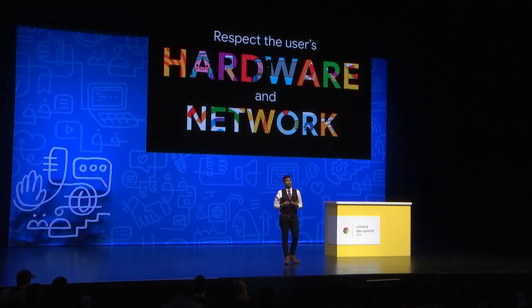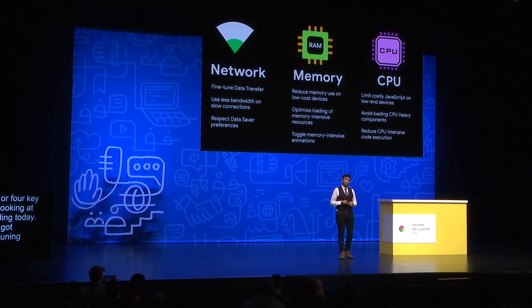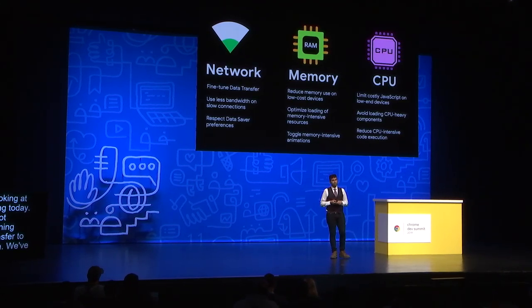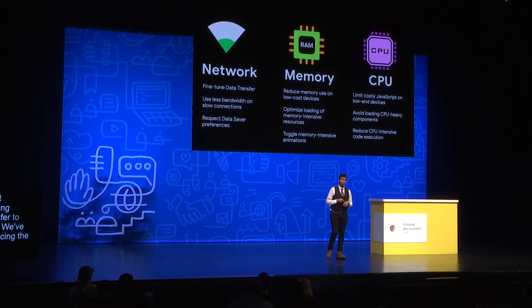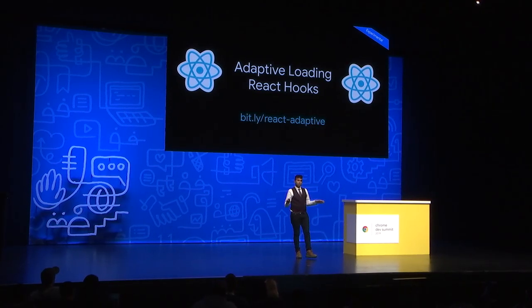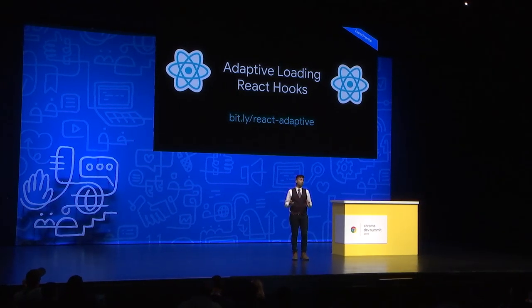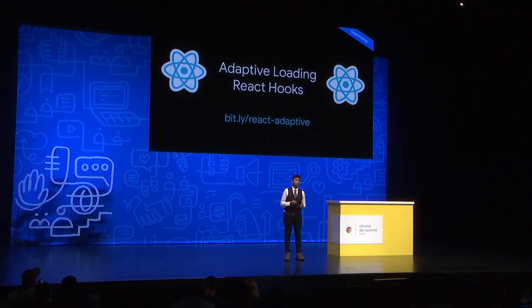Your users' hardware and network type can massively impact the experience they're going to have with your site. There are three or four key signals we'll be looking at for adaptive loading today: network for fine-tuning data transfer to use less bandwidth, memory for reducing memory consumption on low-end devices, CPU for limiting costly JavaScript execution and reducing CPU-intensive logic. Today we're releasing a new experimental set of React hooks for adaptive loading.